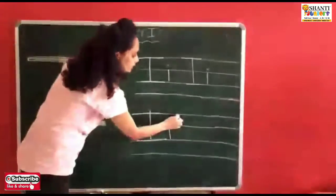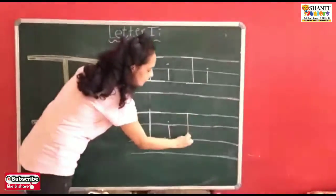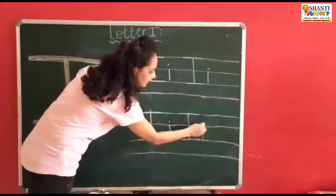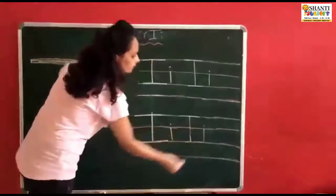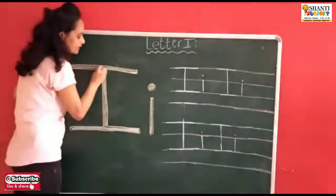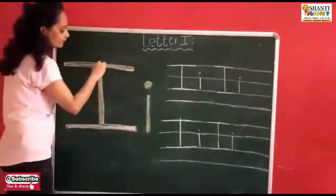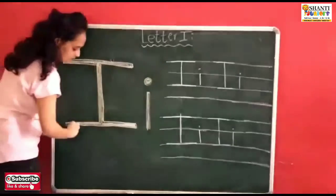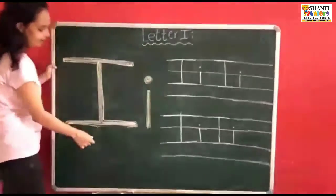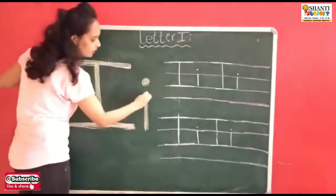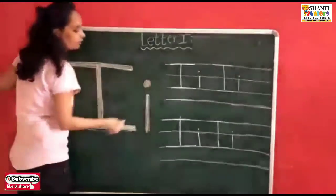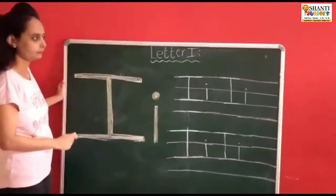Sleeping line, standing line, sleeping line — letter I. So it's very simple children. One more time: sleeping line, standing line, sleeping line — it becomes letter I. And how do we write small letter? Only standing line and one dot — it becomes letter I.